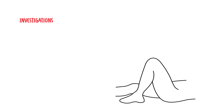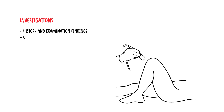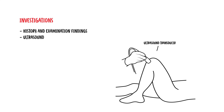Regarding investigations for quadriceps muscle pathology, usually the diagnosis is made clinically based on history and examination findings. However, investigations that can be useful include an ultrasound as well as an MRI to look at other differential diagnoses.